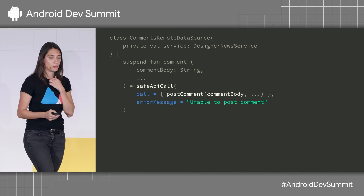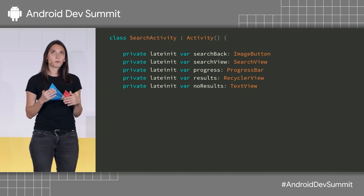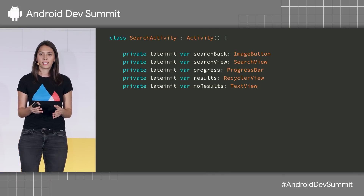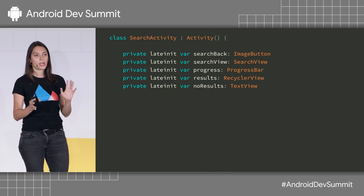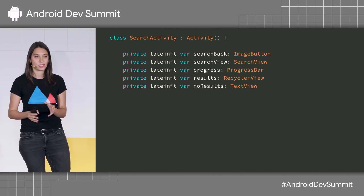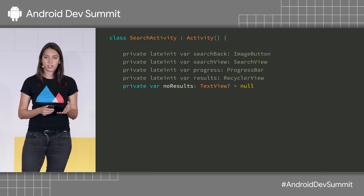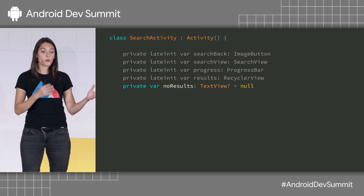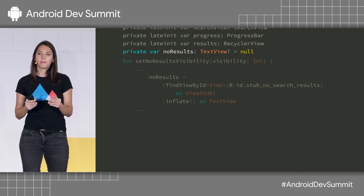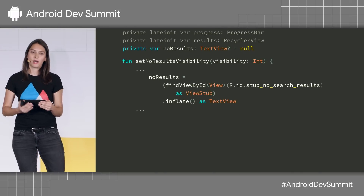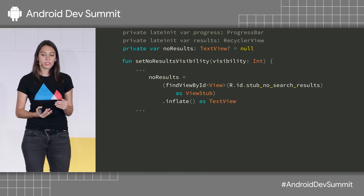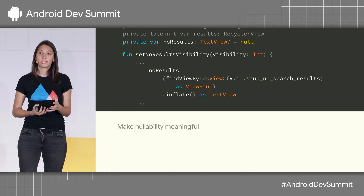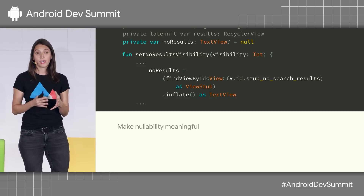As soon as we were switching to Kotlin, especially in our activities, the first thing we did was make all of our views lateinit because we didn't want to handle all of the nullability. But then we looked at our code again and saw that we shouldn't do this — some views, for example no-result views, are only inflated when specific conditions are met. So nullability was actually good. Nullability can be meaningful — it was telling us that something is missing, and we should really handle it.